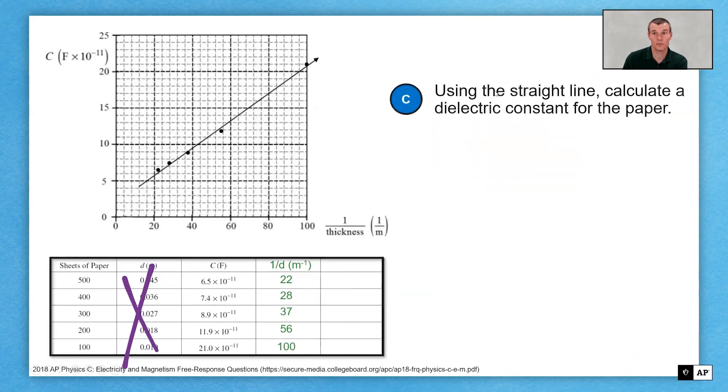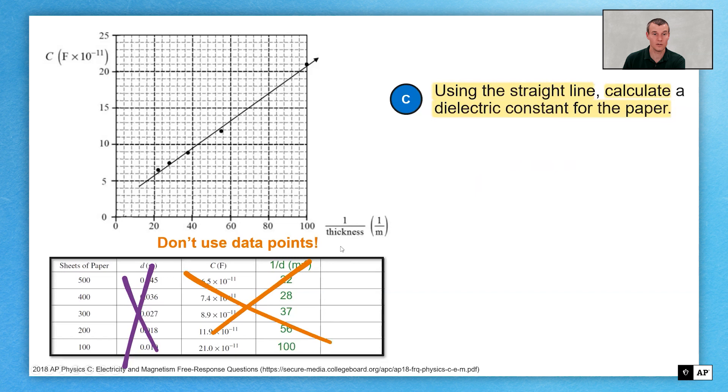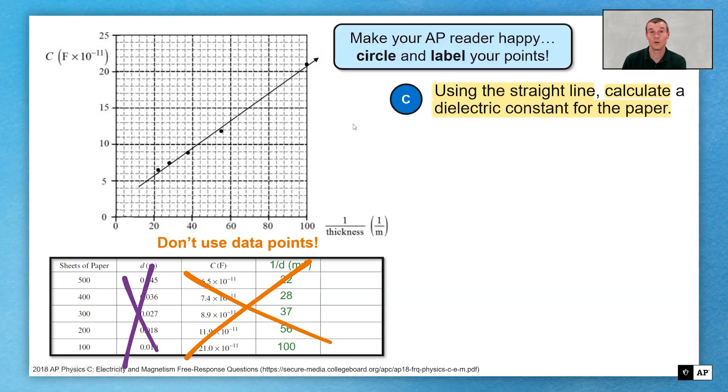With that trend line, what are we going to do with it? We're going to use that straight line to calculate the dielectric constant for the paper. Well, we don't want to use the data points. Because now it says using the straight line. You want to use your trend line.